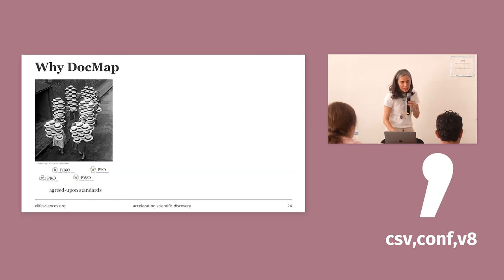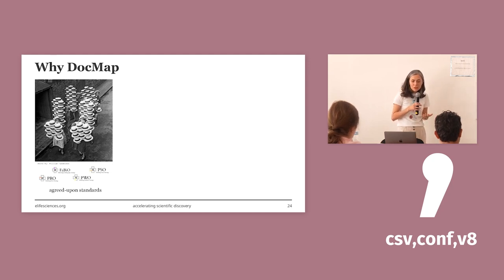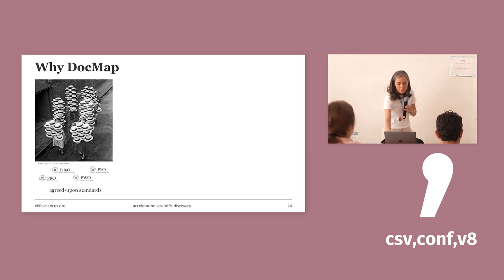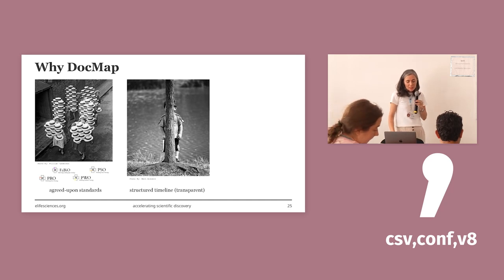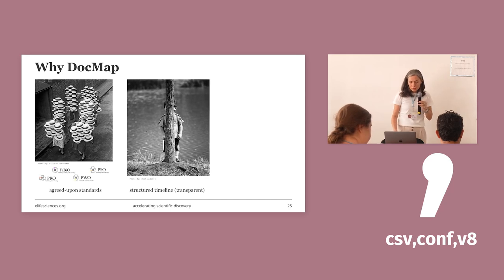Let's explain why we chose to use DocMap. First, DocMap uses agreed-upon standards to align with the editorial process. We have SPAR ontologies like FABIO, PSO — publishing status ontology — publishing roles ontology, and publishing workflow ontology. That means rather than creating new models, developers can use these reliable and adaptable models. Another reason is that DocMap provides a structured timeline which promotes transparency and perfectly aligns with our commitment to open science, ensuring all these steps are visible and accessible to everyone.